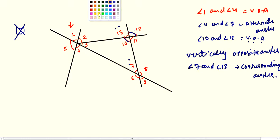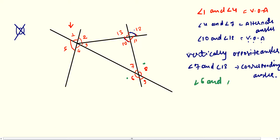Next is angle 6 and angle 8. This is your angle 6 and this is your angle 8. Angle 6 and angle 8 are vertically opposite angles.